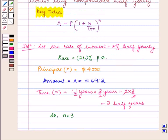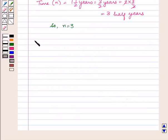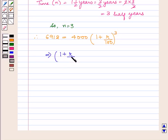Now as amount A is equal to P into 1 plus R upon 100 raised to power n, therefore 6,912 equals 4,000 into 1 plus R upon 100 raised to power 3, which implies 1 plus R upon 100 raised to power 3 equals 6,912 upon 4,000.